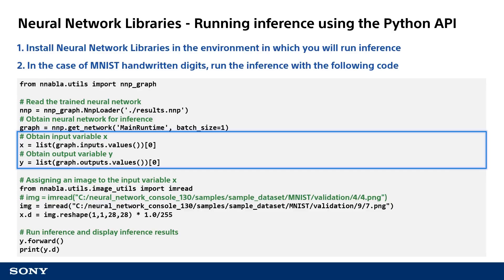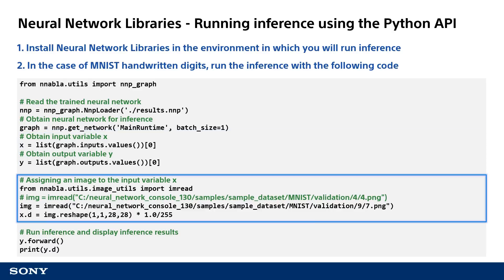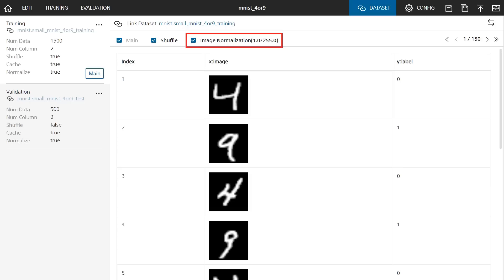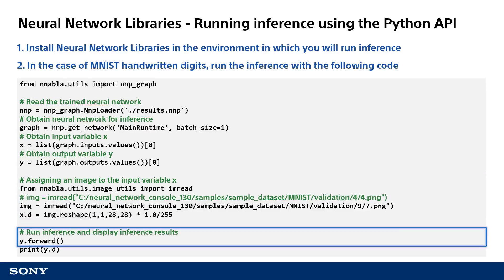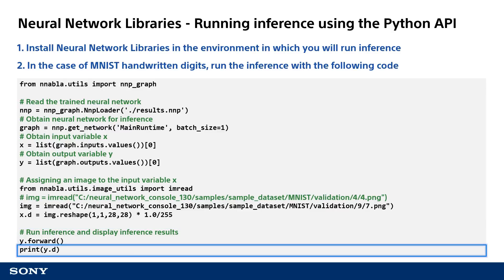To run the training process in neural network console on a neural network with two or more input or output layers, specify at least one index to enable processing of the second and subsequent input-output data. The next few lines assign data to the input layer X. The imread API is used to assign loaded image files to X. If the image normalization checkbox is selected on the dataset tab in neural network console, the brightness value is divided by 255 at this time. Now that the data has been assigned, the next line starts the image classification processing. To run inference, the forward command is called for the output layer. Now the inference process will be performed.